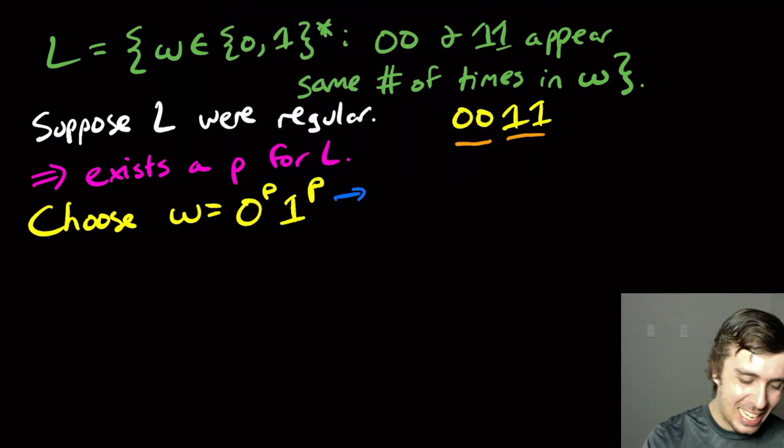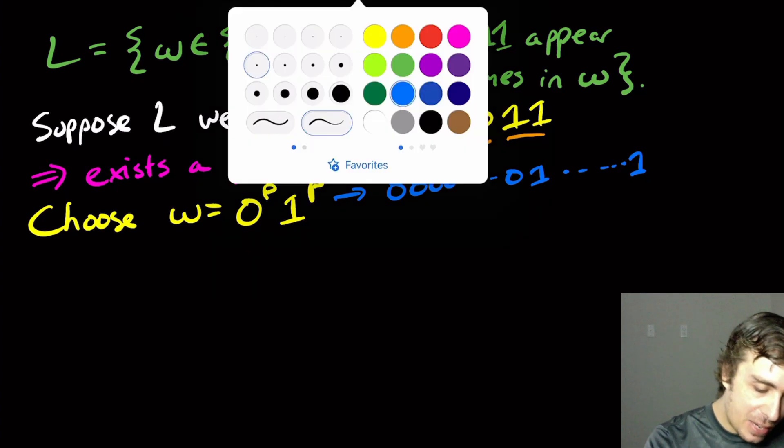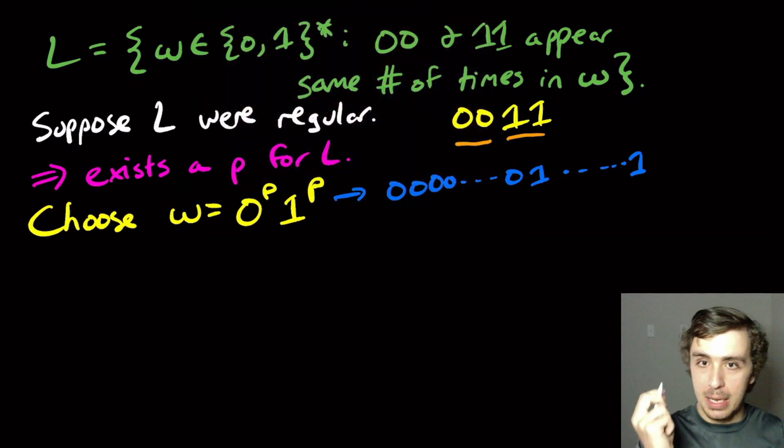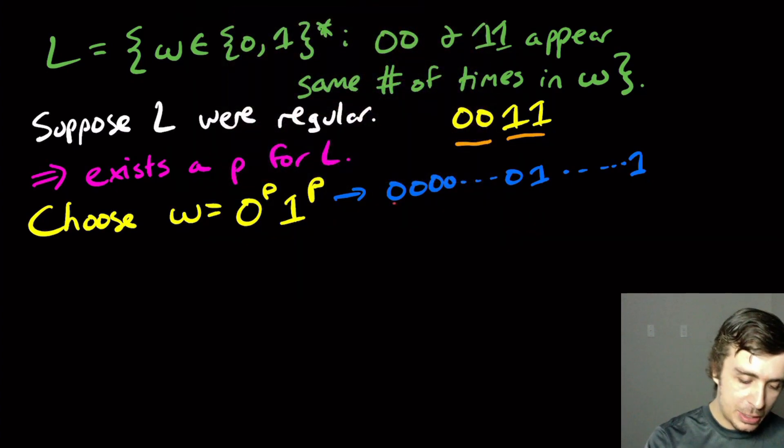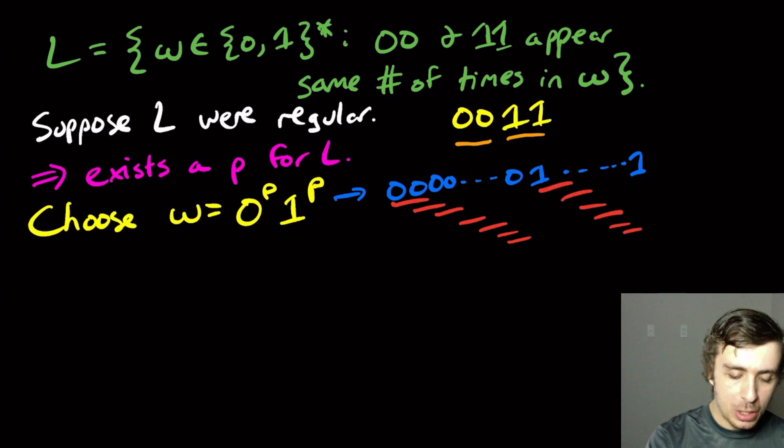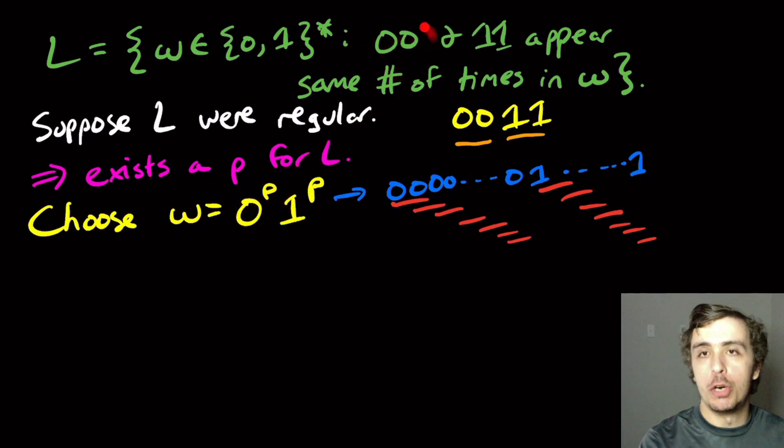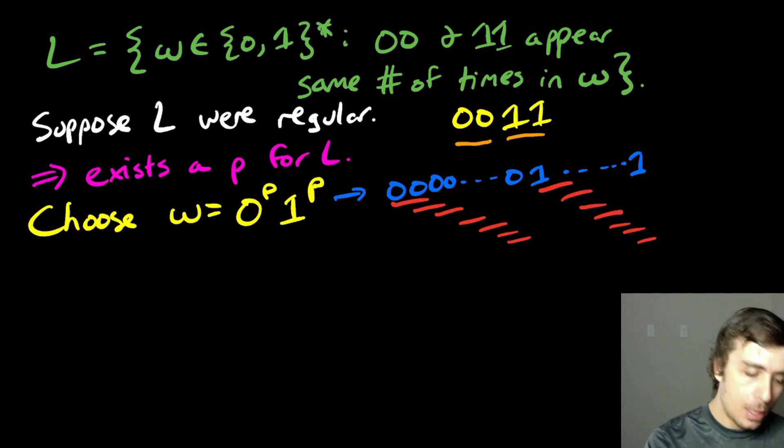Let's think about what this string actually is. It's a whole bunch of zeros and then a whole bunch of ones. So let's think about where the 00 occurrences are. It's right there, right there, right there. It's kind of like this staircase pattern that goes down. And the 11s occur in the same way. In fact, there are P-1 occurrences of 00 in there, and P-1 occurrences of 11 in there for the same reason.